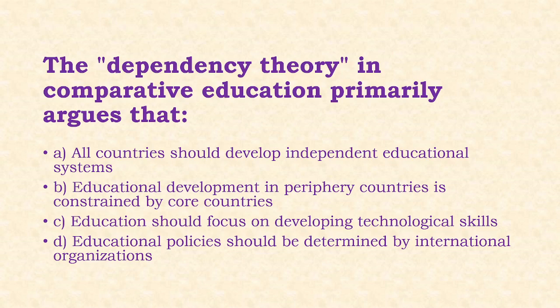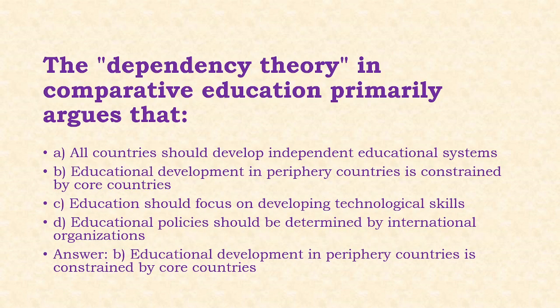Next: The dependency theory in comparative education primarily argues that educational development in periphery countries is constrained by core countries. Options: all countries should develop independent educational systems; educational development in periphery countries is constrained by core countries; education should focus on developing technological skills; educational policies should be determined by international organizations. The answer is option B.